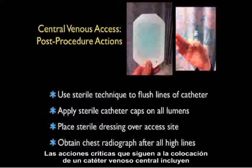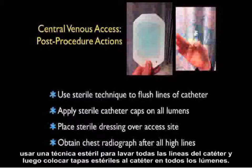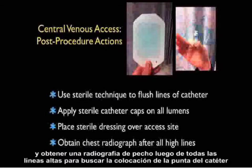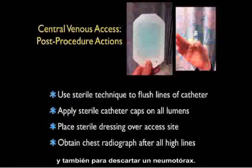Critical actions following placement of a central venous catheter include using sterile technique to flush all lines of the catheter and placing sterile catheter caps on all lumens. We then place a sterile dressing — such as the Tegaderm shown in the picture to the upper right — over the access site, and obtain a chest radiograph after all high lines to confirm catheter tip placement and to rule out a pneumothorax.